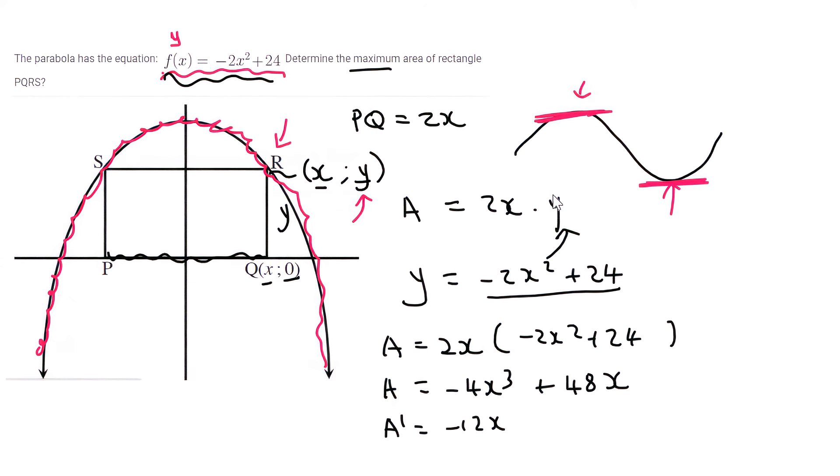So that's going to be negative 12x squared plus 48. We can then make that equal to 0. And so then what we can say is 12x squared is equal to 48. x squared would be equal to 4 if you divide, and then x would eventually end up being positive or negative 2. But now we can see where this x is. It's on the right hand side. So we'll just say that x is equal to 2.